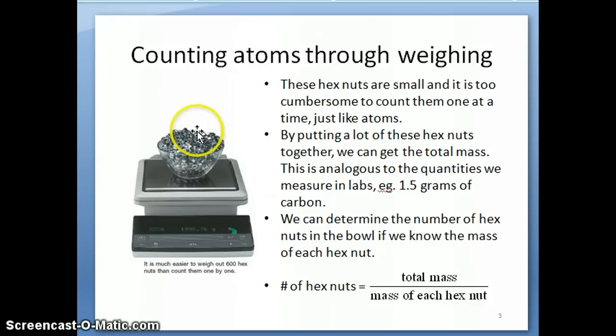That's really the same idea we use to count atoms. We know that atoms are too small—we can't count them—but we can weigh a certain mass of material, for example 10 grams of iron. If we know the mass of each individual iron atom, dividing the total mass by the mass of each atom basically tells us how many atoms we have.